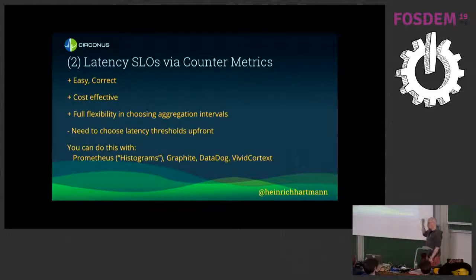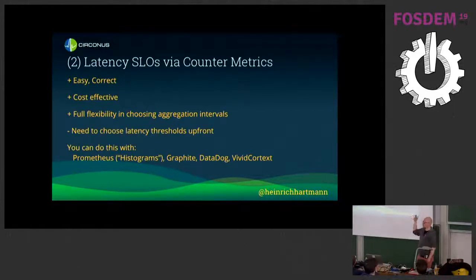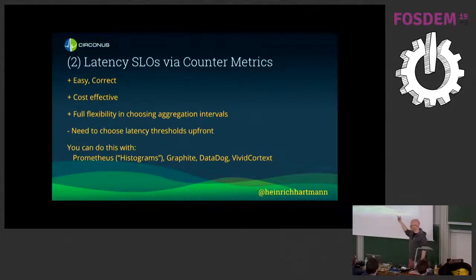The downside is you need to choose your latency thresholds up front — the one-second value is hard-coded. Many people do this seriously: they hard-code a bunch of latency thresholds and create metrics for each. Cloudflare has examples where they use 1,000 buckets per API — not for all APIs, but for those they monitor this way — so they can later select whichever latency threshold they're interested in.